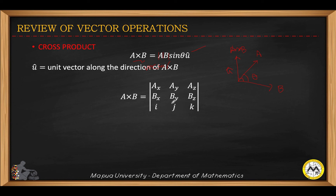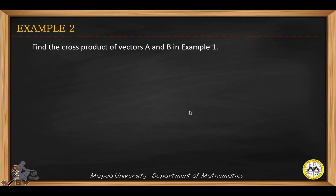The cross product is obtained by evaluating the determinant of a three-by-three matrix where the first row contains the orthogonal unit vectors i, j, k, followed by the components of the first vector and then the components of the second vector. Apply cofactor expansion to get A cross B.